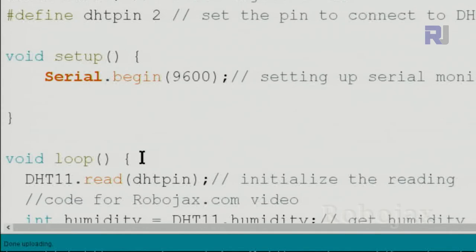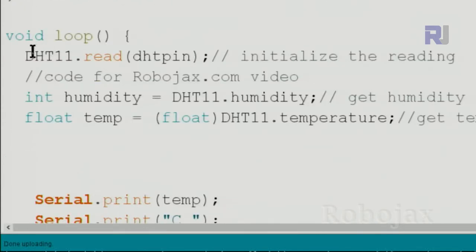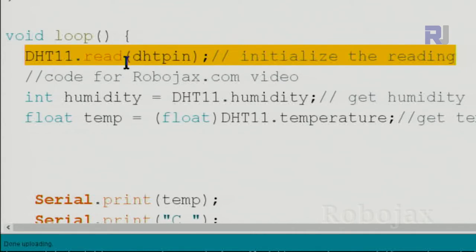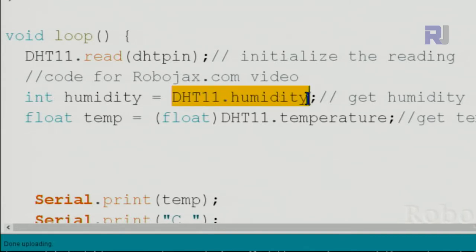Inside the loop we use dht11.read and we pass the pin number. This reads the value. Once you get the humidity, we type dht11.humidity and this will give us the actual value. You can print directly using serial monitor, but if you want to do some calculation or manipulate it later, you can store it in another variable. This will be easier to handle. The same way we can do dht11.temperature.